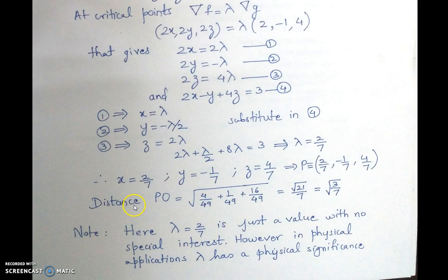And let us check the distance of the point from origin. It turns out to be root of 21 by 7, that is again 3 by root 21. In other words, we have solved the problem.